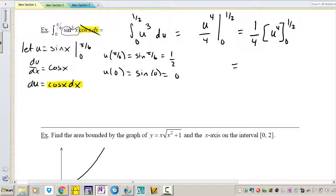So that is 1/4 u to the fourth from 0 to 1 half and then we just apply our limits of integration. 1/4 times 1 half so it's going to be 1 half to the fourth minus 0 to the fourth but we know that's going to be 0. So this really just becomes 1/4 times 1 over 16 which is 1 over 64. There it is, there is my area under the curve.